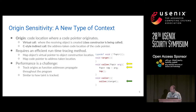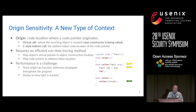This is what we have called origin sensitivity. For the virtual function call, origin sensitivity means where the object is created — that is actually the constructor function call.